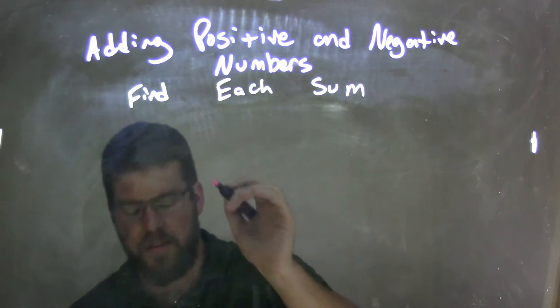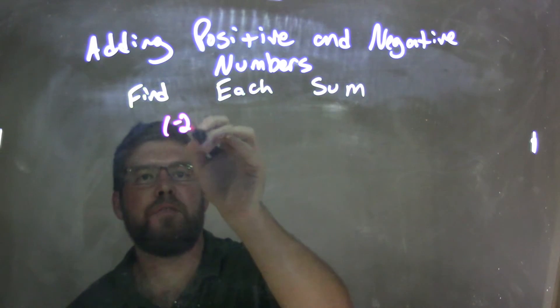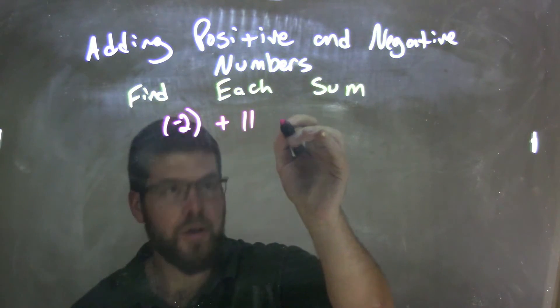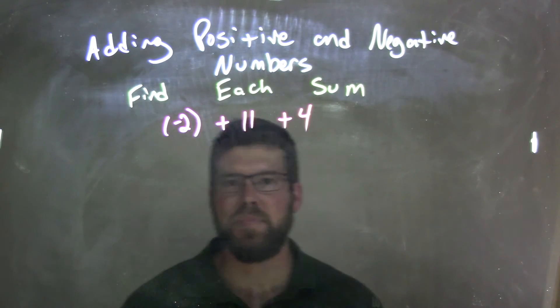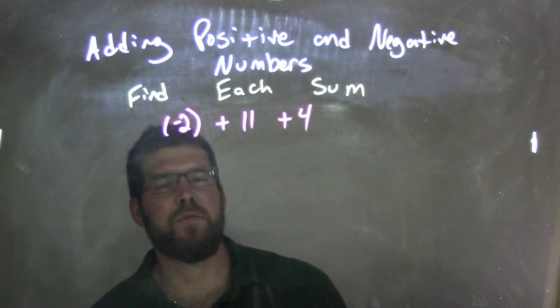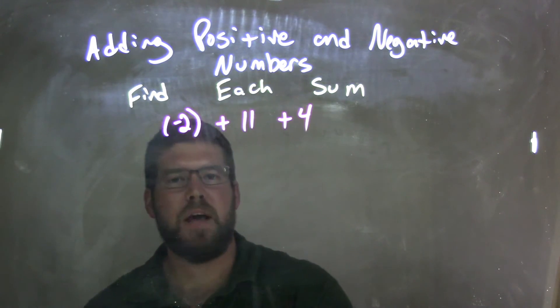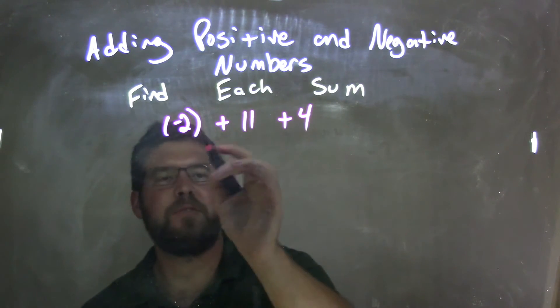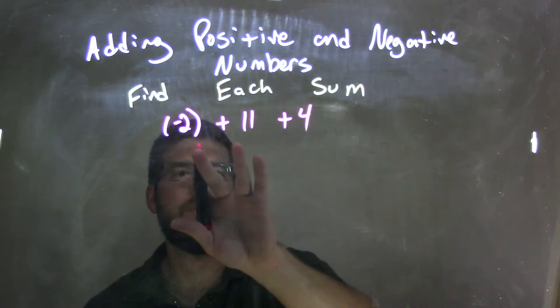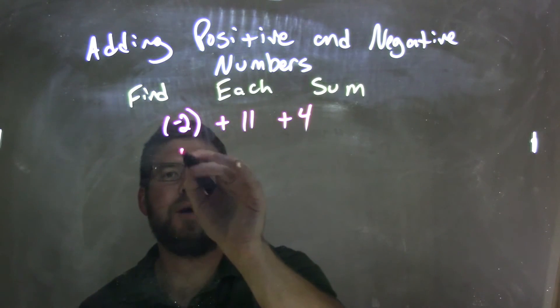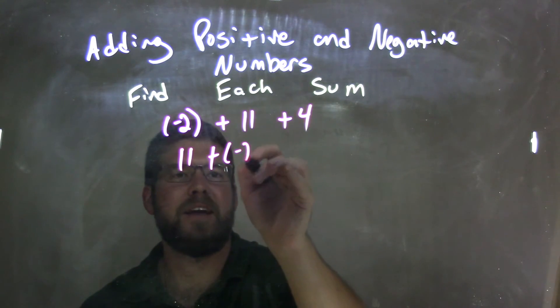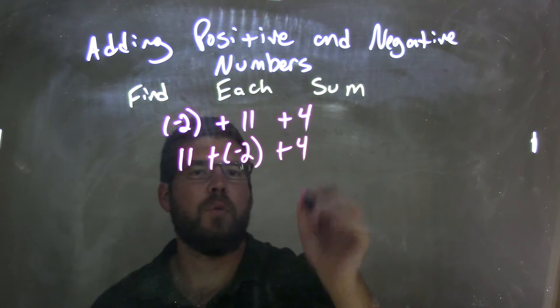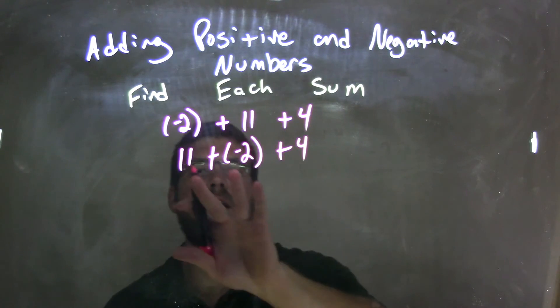So if I was given this expression, negative 2 plus 11 plus 4. Well, negative 2 plus 11, that's the same thing as 11 plus a negative 2, right? So I'm going to actually use the commutative property and switch these. So now we have 11 plus a negative 2 plus 4. Since they're all addition, we can apply that commutative property of addition here.